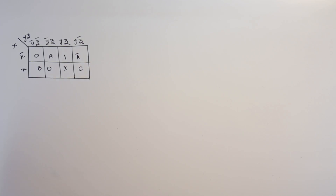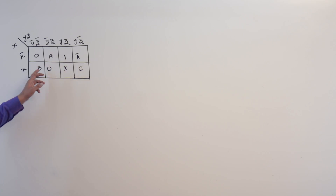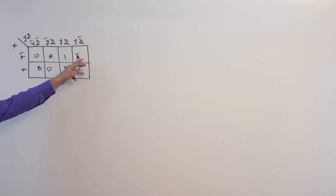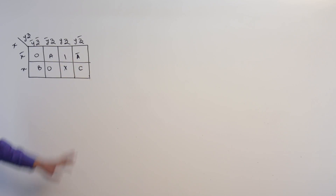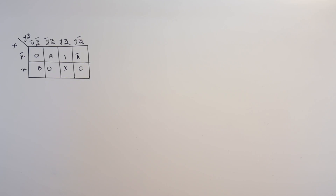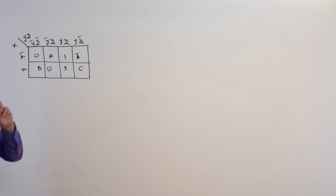Now let us solve this variable entrant kmap. In this variable entrant kmap, we have three variables a, b, and c and we have a complement. We consider a and a complement as separate variables whenever we are solving a variable entrant kmap. So if you have a variable and its complement, consider them as two separate variables.